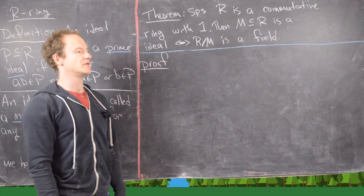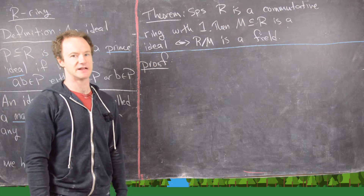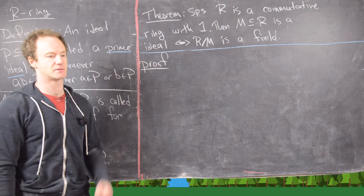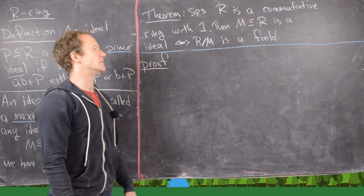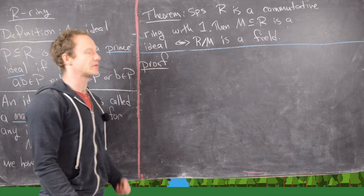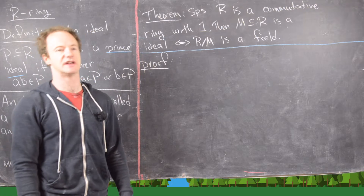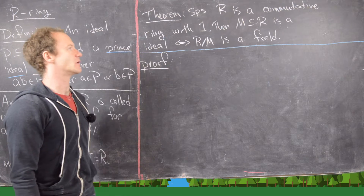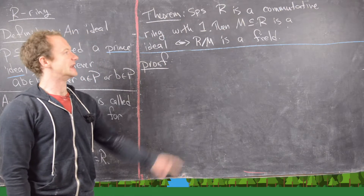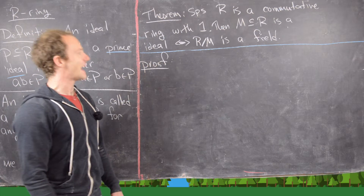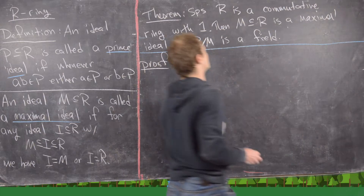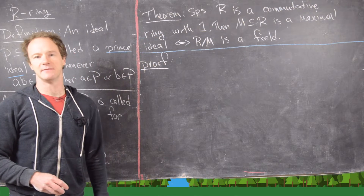We just showed that if we have a prime ideal and mod out by it, we get an integral domain. A maximal ideal is like a prime ideal with more structure, so modding out by a maximal ideal should give something with more structure. What has more structure than an integral domain? A field. So for a commutative ring with 1, M is a maximal ideal if and only if R mod M is a field.